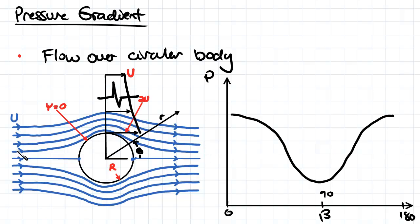So as we go over the body, we're going to have a reduction in pressure. That reduction in pressure gives us a pressure gradient, and that's actually going to be a favorable pressure gradient when we're reducing in pressure.